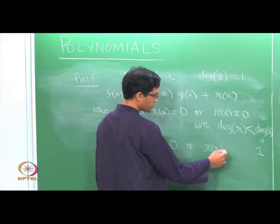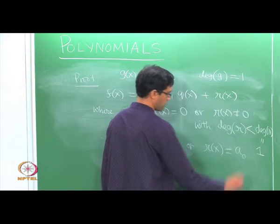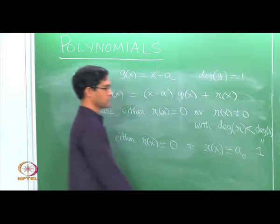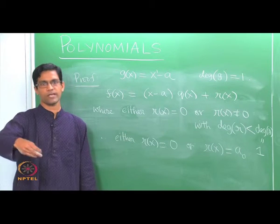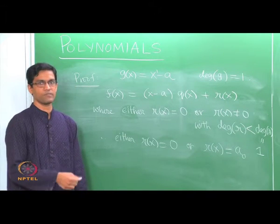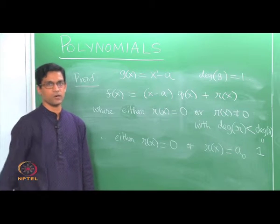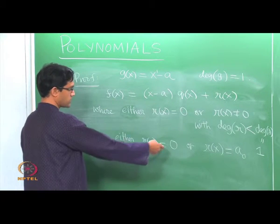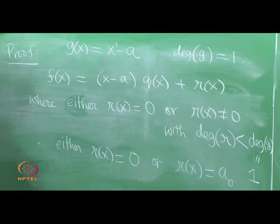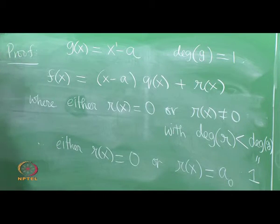So we conclude that either r(x) is 0, or r(x) has degree 0. What does a degree-0 polynomial look like? It only has a constant term — remember a polynomial looks like a₀ + a₁x + a₂x² + …, and if it has degree 0, it only has the constant term a₀. So the remainder is basically a constant — either zero or possibly a non-zero constant.